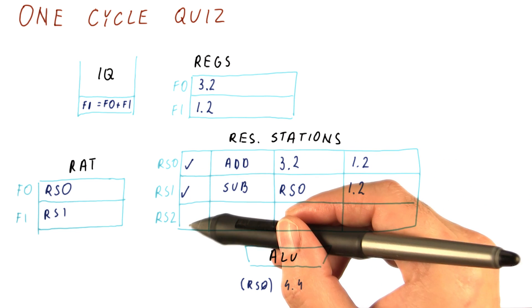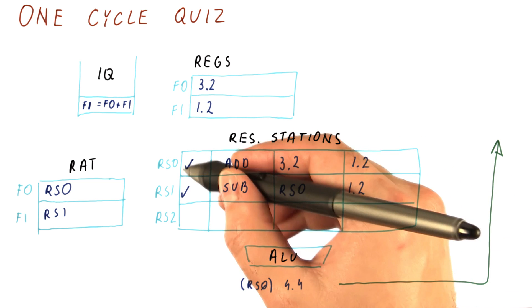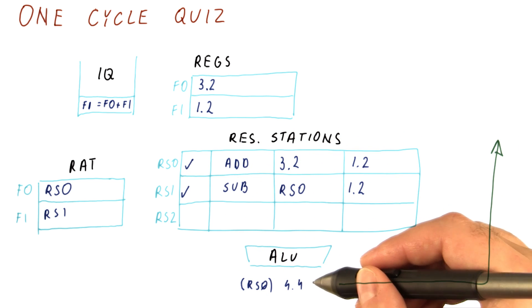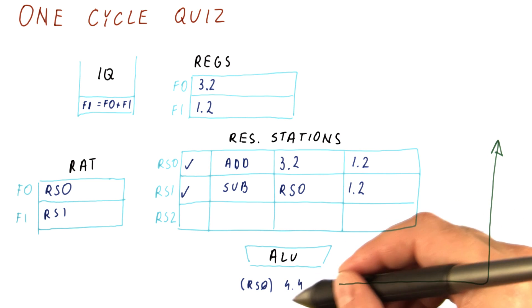Two of them are occupied. One is still available. And the instruction in reservation station zero is executing in the ALU. And during this cycle, it will broadcast its result, which is 4.4.